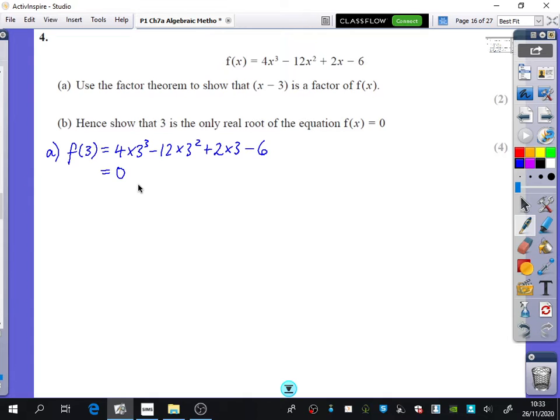So 4 times 3 cubed minus 12 times 3 squared plus 6 minus 6. Yeah, they're going to be, hopefully that's equal to 0. I haven't even checked it, but it would be. Yeah, it is.